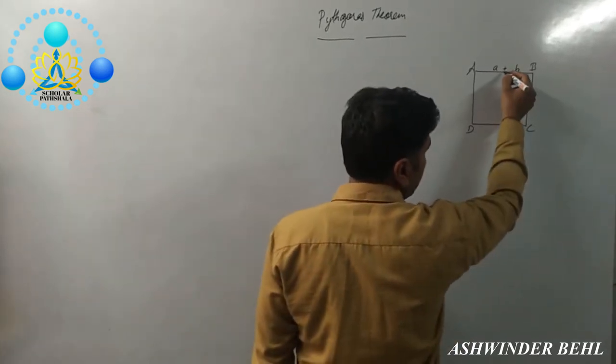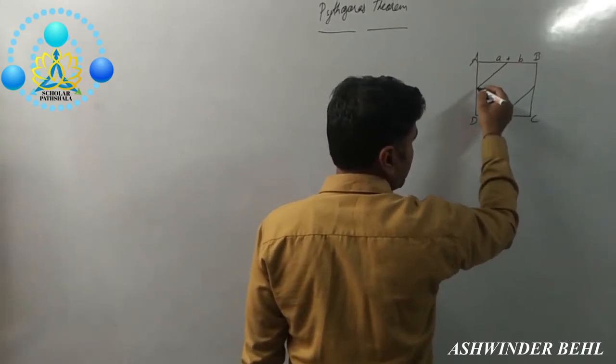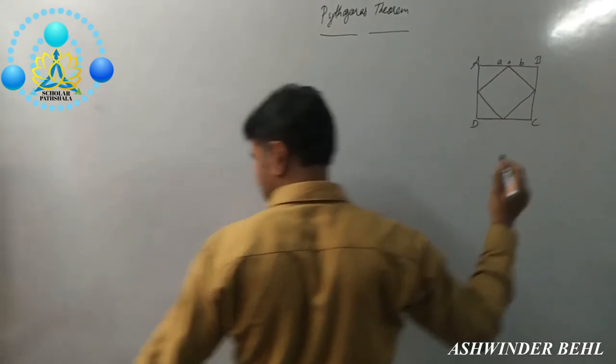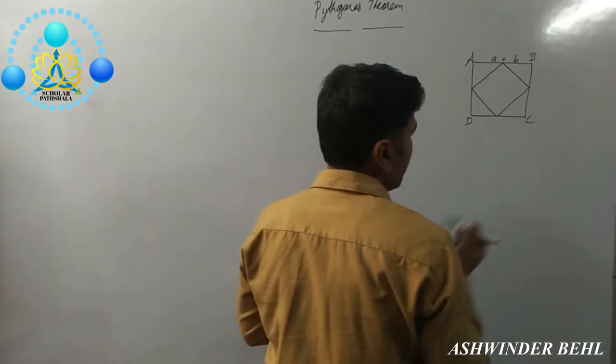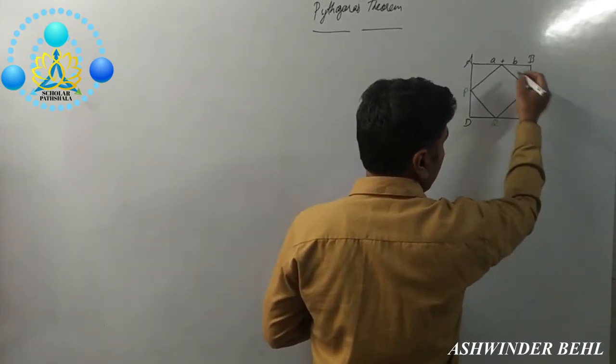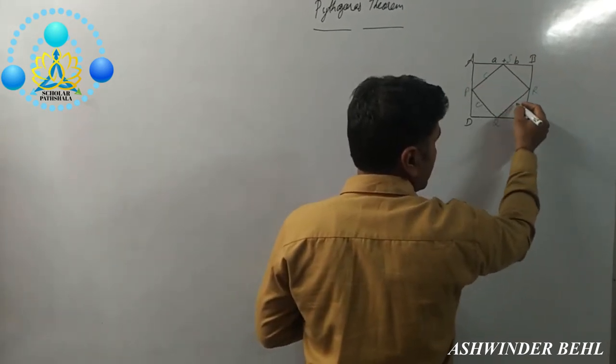Now, we can draw another square. We can label that as P, Q, R, S with side of C.